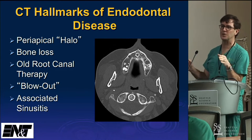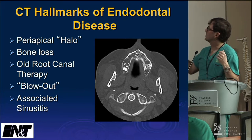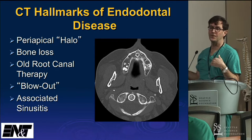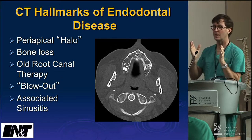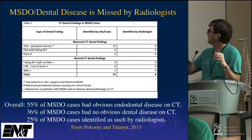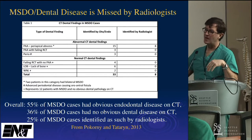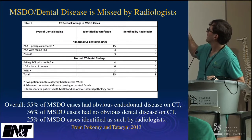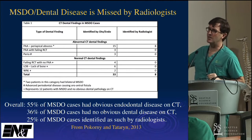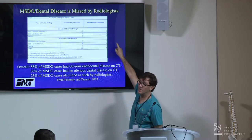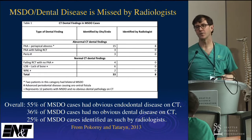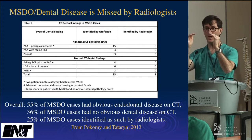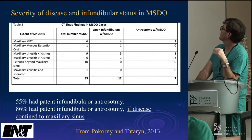Open your eyes and you will see. On CT, look for the periapical halo, bone loss over the top of the tooth root, and old root canals that have gone bad — about 15 to 20% of root canals fail over 15 to 20 years. In our 33 cases, only 8 of 33 were identified by a radiologist. Those with obvious dental disease were caught, but indirect clues — old root canals, lack of bone over the tooth top — were frequently missed. A patent infundibula is also a clue: 86% of cases with maxillary sinusitis of dental etiology had a patent infundibula.